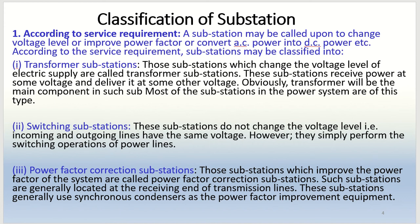Switching substations do not change the voltage level — that is, the incoming and outgoing lines have the same voltage. However, they simply perform the switching operation of power lines.